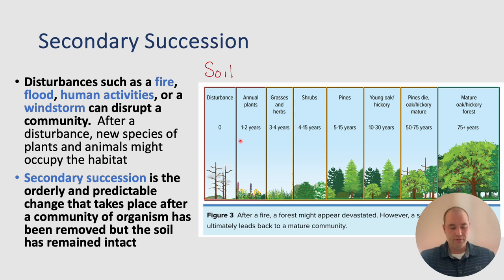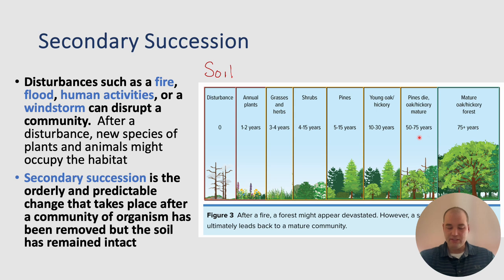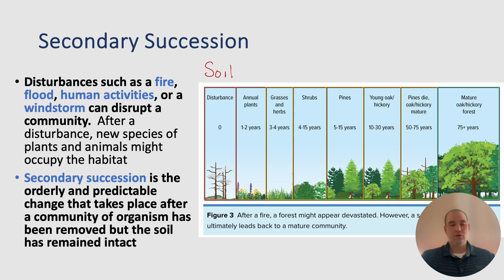After some sort of disturbance, within one to two years we'll see the annual plants. Grasses and herbs come in about three to four years. Shrubs, about four to fifteen years. Pines, about five to fifteen. Young oaks and hickories, about ten to thirty. Then pines die and the oaks and hickories begin to take over, until eventually we reach our mature forest. Secondary succession has the soil in place, so we're going to look at how a forest fire progresses through this.